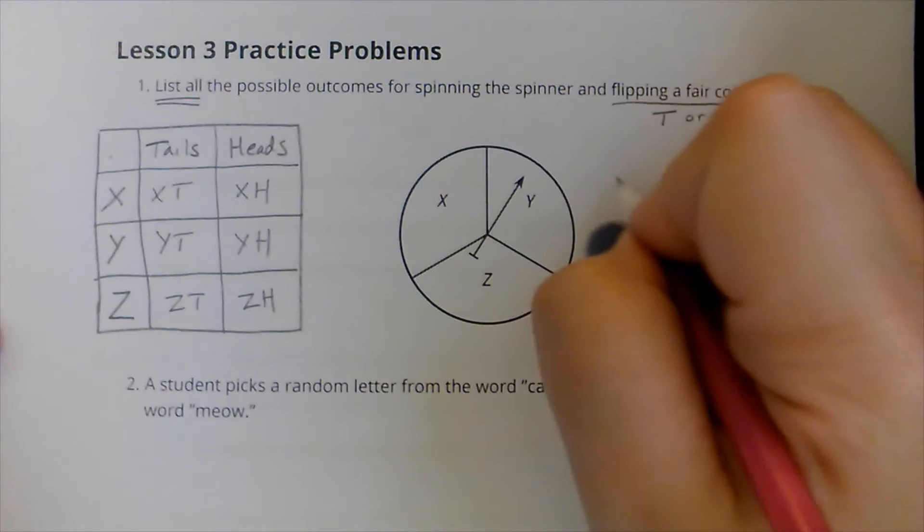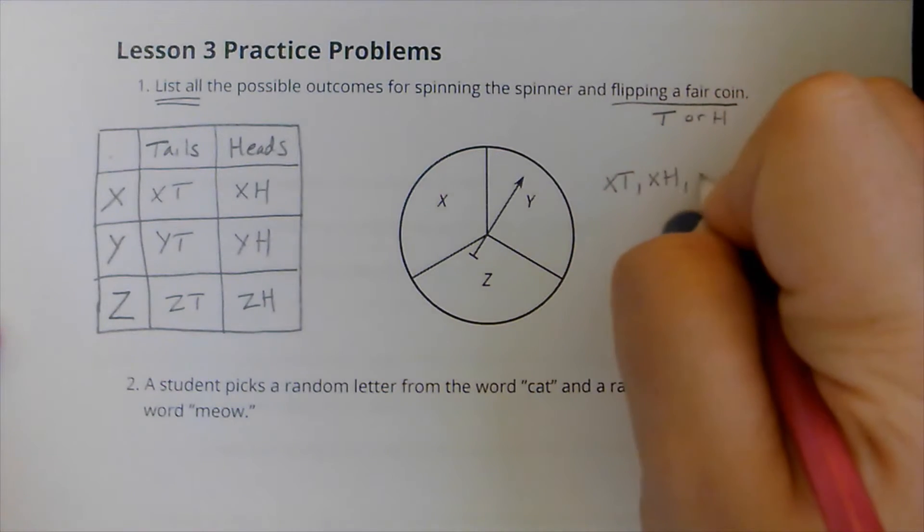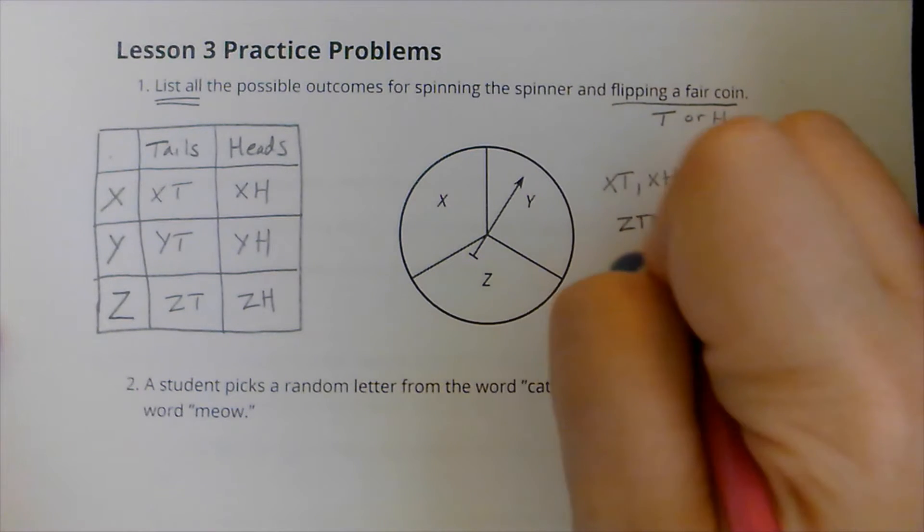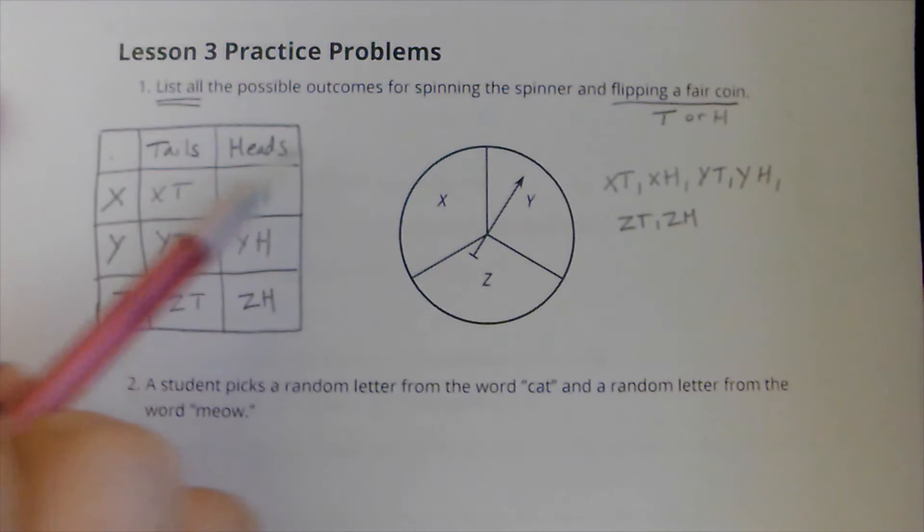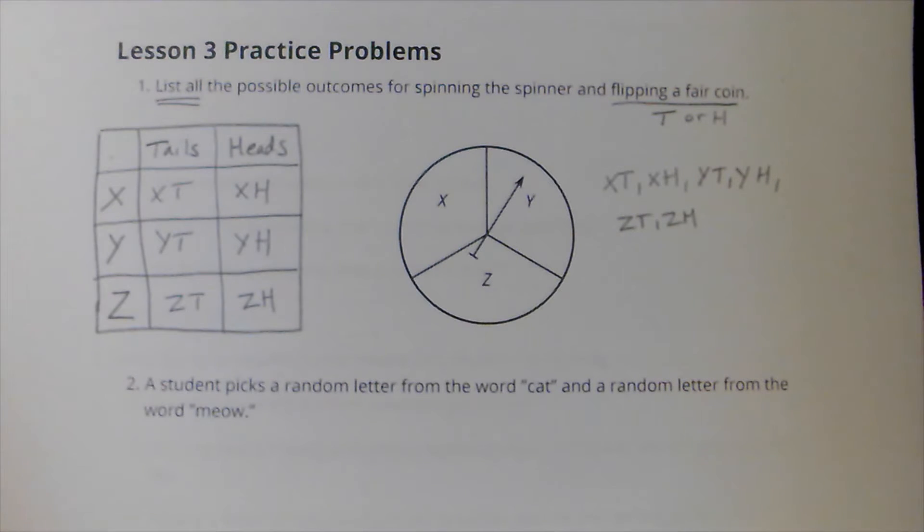So one option is to get X in tails, or I can get X in heads, or I can get Y in tails, or I can get Y in heads, or I can get Z in tails, or I can get Z in heads. So I do have to actually list them out, so my sample space would be XT, XH, YT, YH, ZT, ZH. There are six outcomes in my sample space. So what I do is I set up one of the set of options on this side, and then I set the other set of options across the top. And then you just fill in each square.